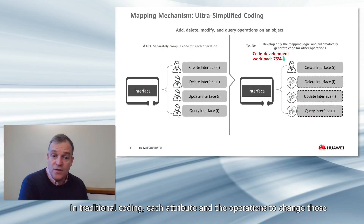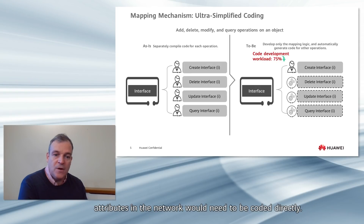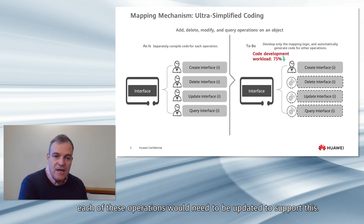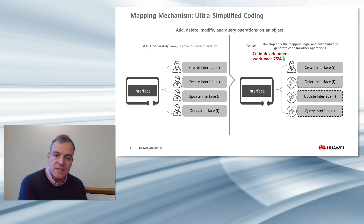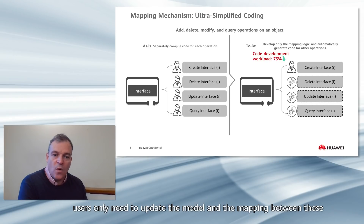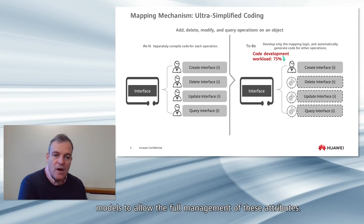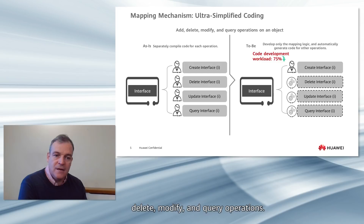In traditional coding, each attribute and the operations to change those attributes in the network would need to be coded directly. If a new attribute or feature was added, each of these operations would need to be updated to support it. With the AOC model-driven design, users only need to update the model and the mapping between those models. AOC then automatically generates code for the delete, modify, and query operations. This reduces the coding workload by 75%.